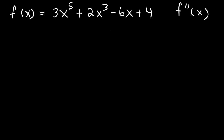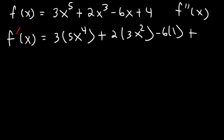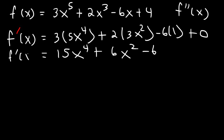We need to find the first derivative to begin. So the derivative of x to the 5th, using the power rule, is 5x to the 4th. And the derivative of x cubed is 3x squared, and the derivative of x is 1, and the derivative of a constant is 0. So this is going to give us 15x to the 4th — 2 times 3 is 6 — and so this is the first derivative.